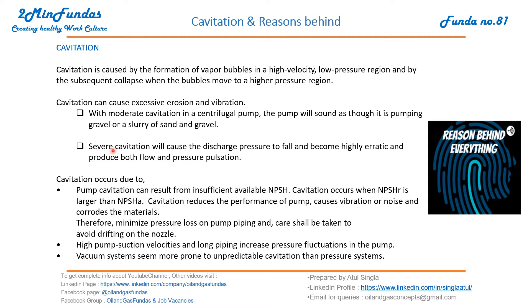If the level of cavitation is severe, it will cause the discharge pressure to fall and become erratic — highly erratic — and produce both flow and pressure pulsation. If the level of cavitation is very high, then it can cause all these problems.